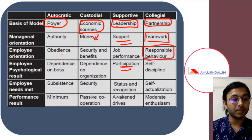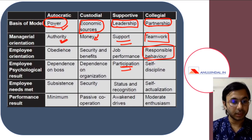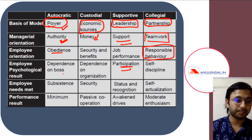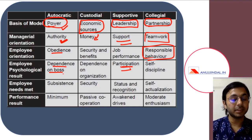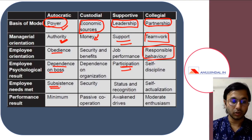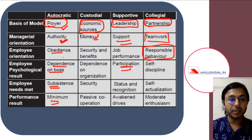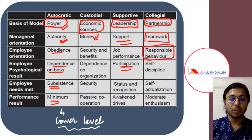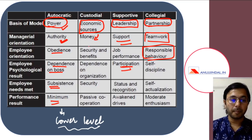In the autocratic model, managerial orientation is to use authority to get work done, so employees' orientation is to obey whatever seniors say. The employee's psychological result is dependence on the boss. Employee needs are met through subsistence only and psychological needs are not met at all. Performance result is minimum. It is normally followed at the lower level of the organization where it is assumed that people belong to Theory X kinds of motivation and are more satisfied through monetary factors only.